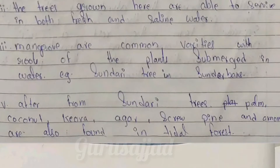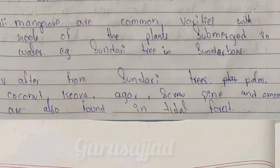Mangrove is a common variety with the roots of the plants submerged in water. The sundari tree is an example. Apart from sundari tree, plum, coconut, agar, scrip, pine and amour are also found in these deltas.